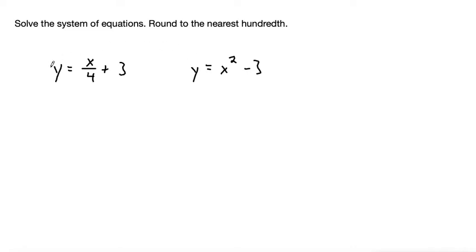Since both of these equations are solved for y, we can do a substitution by taking what y is equal to in one equation and substituting it into the other equation. This simplifies pretty easily because it's already solved for y in both equations. This will be a common strategy when you have both equations solved for a single variable.